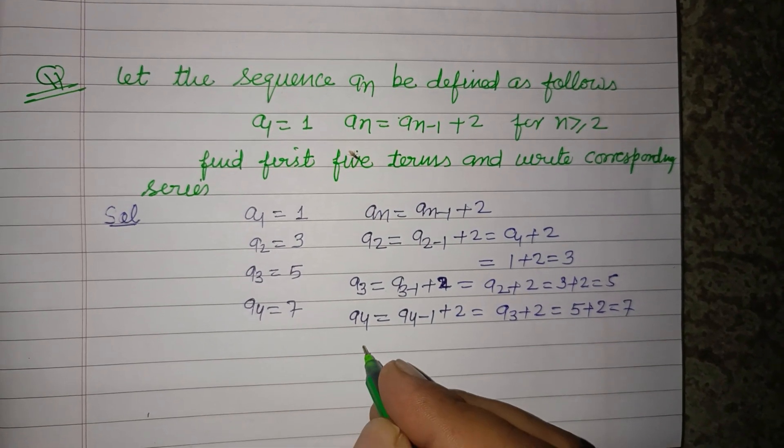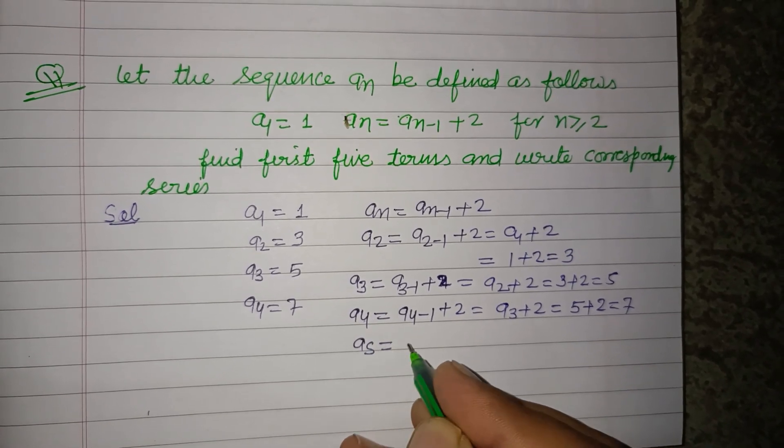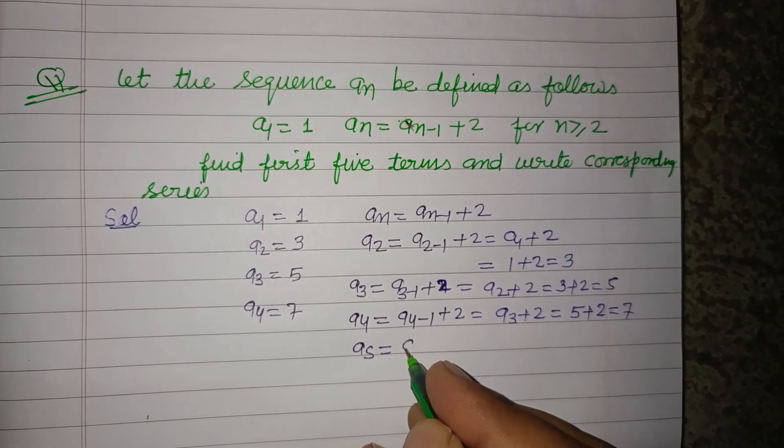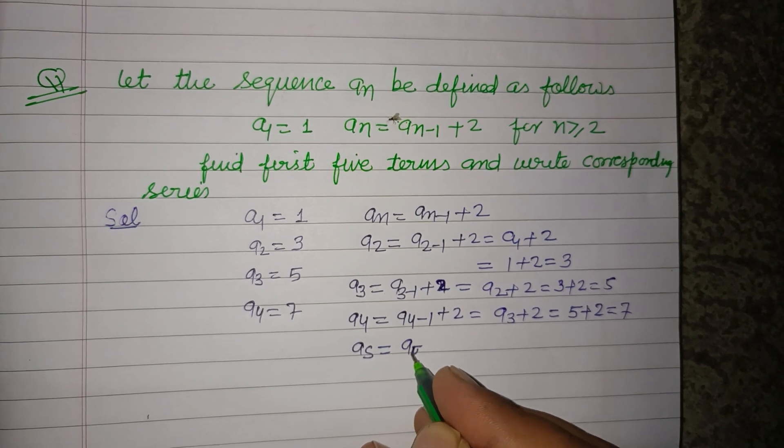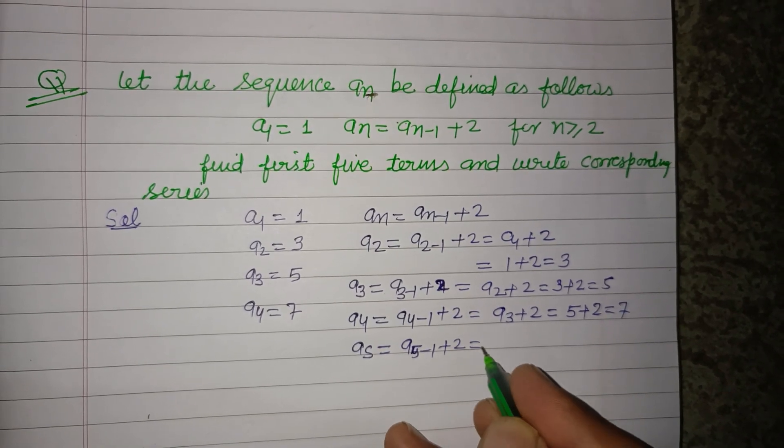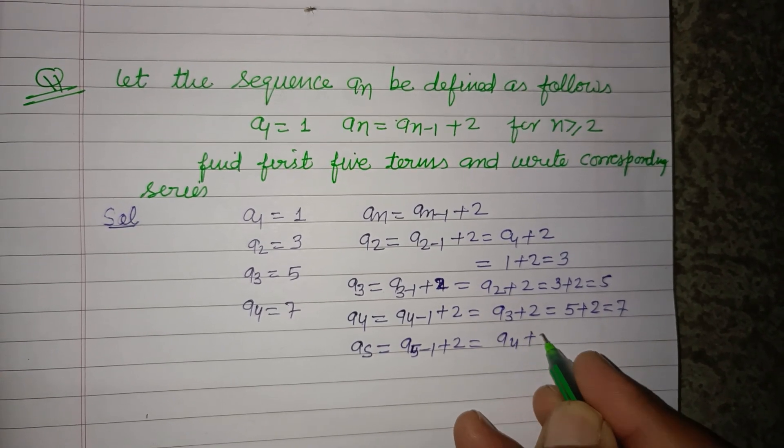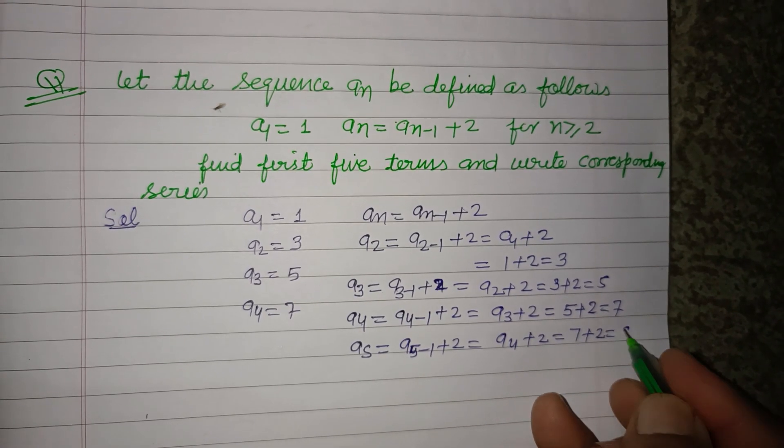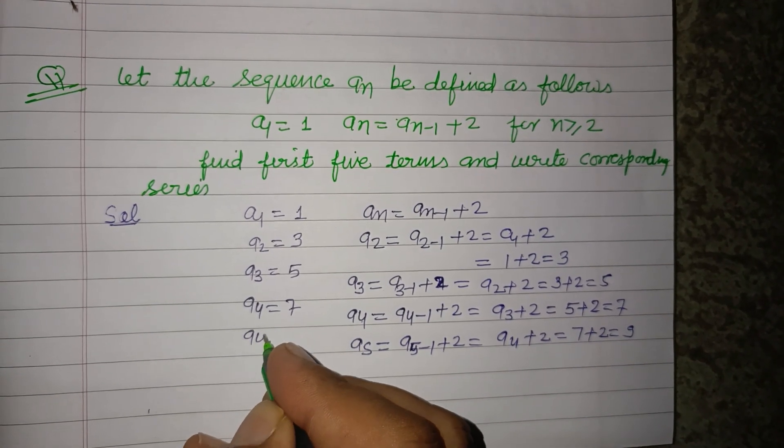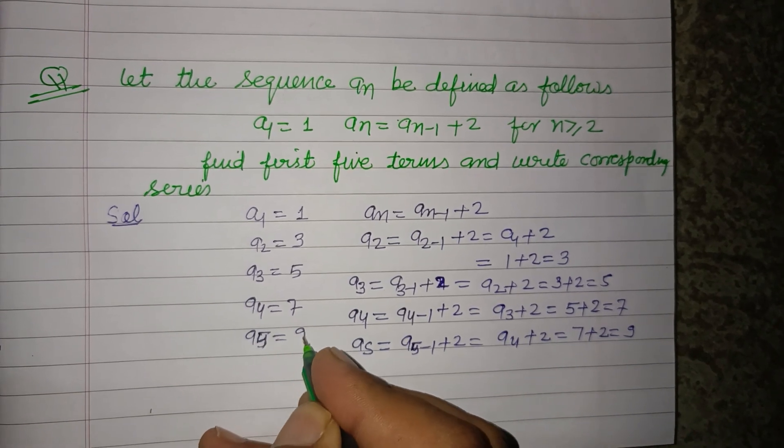Similarly, put n = 5. You will get a₅₋₁ + 2, that is a₄ + 2. a₄ is 7, so 7 + 2 = 9. So a₅ is 9.